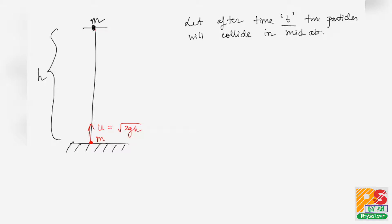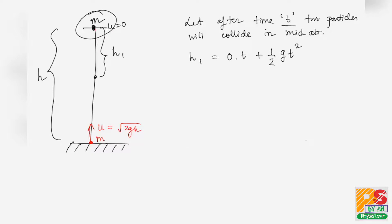In this time t, the first particle will cover a distance h1. h1 = ut + ½at². Since the particle is released from rest, u = 0, so h1 = ½gt².